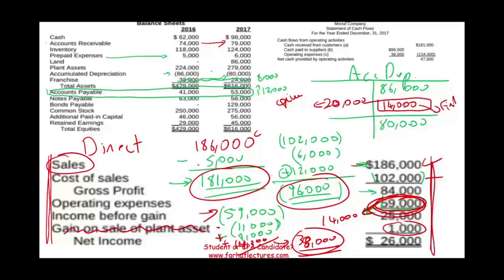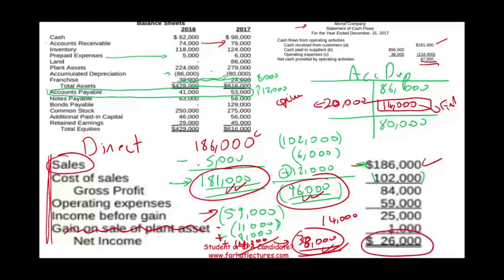Overall, I now prepare my statement of cash flows. Cash received from customers: 181,000, computed here. Cash paid to suppliers: 96,000. Cash paid for operations: 38,000. Netting them out, net cash provided by operating activities is 47,000. Notice my net income was 26,000 — my accrual net income — but cash provided from operating activities is 47,000, which is more.